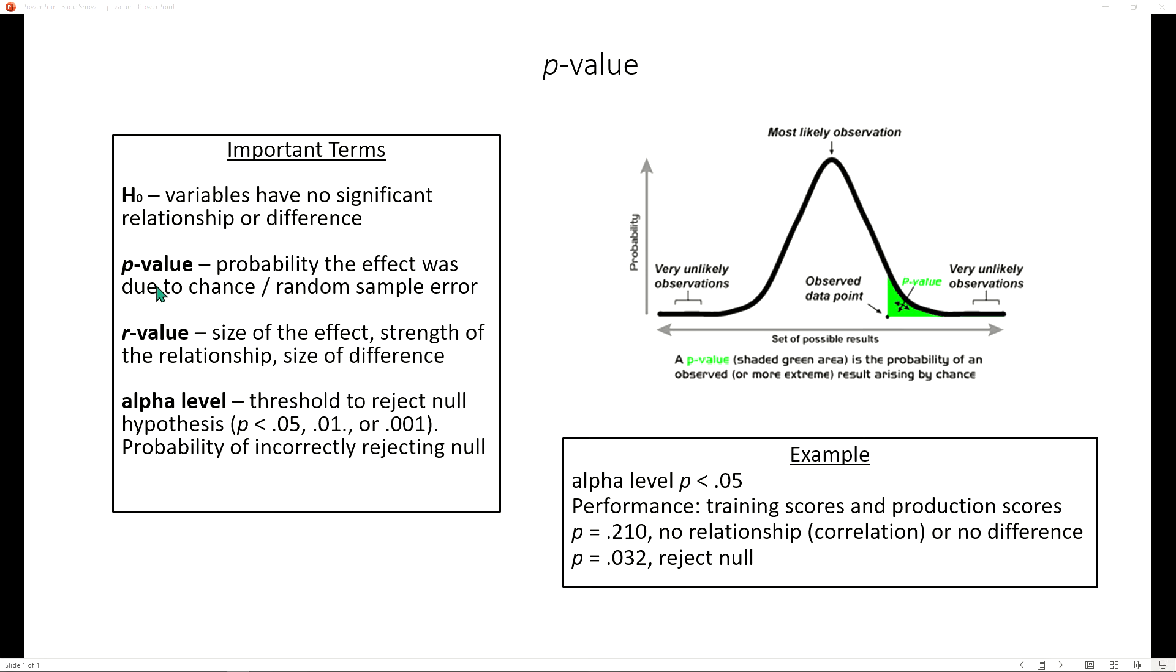The p-value is the probability the effect was due to chance or some random sample error. Essentially what that means is if the value is greater than our alpha level, which I will describe shortly, then our results are just simply due to chance. There was no impact of that independent variable on the dependent variable.